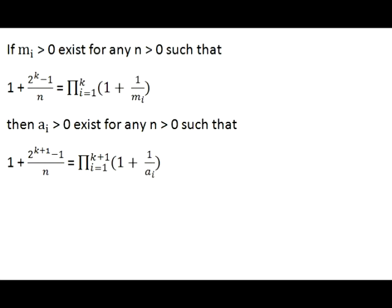Let's think logically how we can prove this. First, we understand that positive integer numbers mi exist for the equality at the top for any given positive integer n. So we can use any n and be sure that positive integer numbers mi exist for this equality.